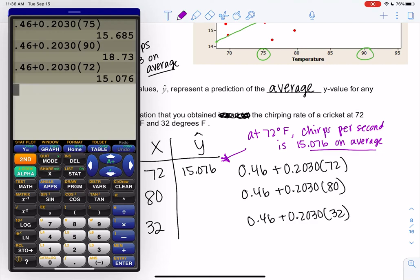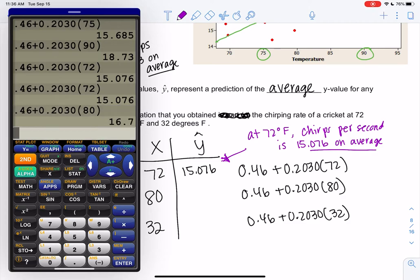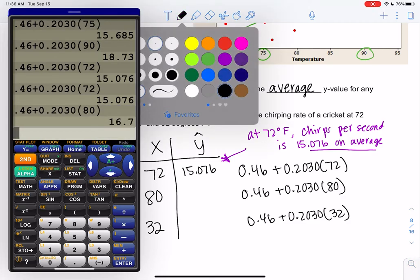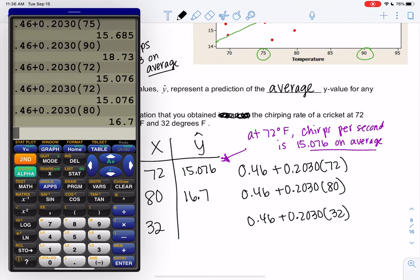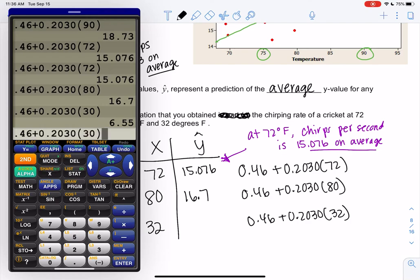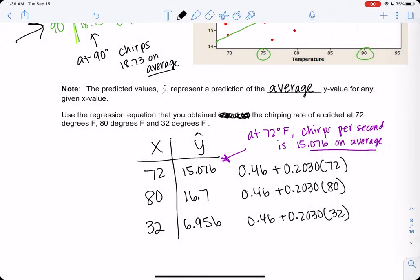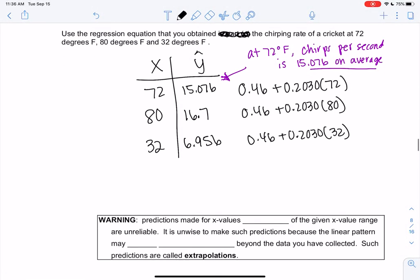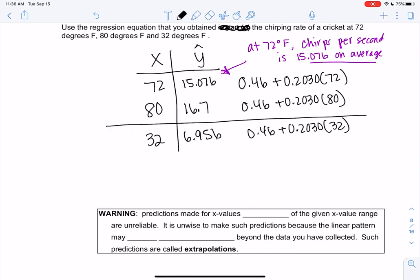And then once you're ready, go ahead and plug in 80 and 32. So at 80 degrees we expect about 16.7 chirps per second. And then 32—I got 6.956. So that's cold, right? 32 degrees. And there's an issue with 32 degrees, so I'm going to separate it.